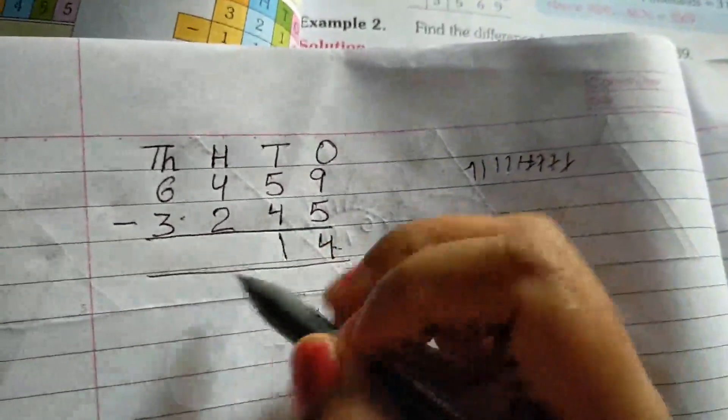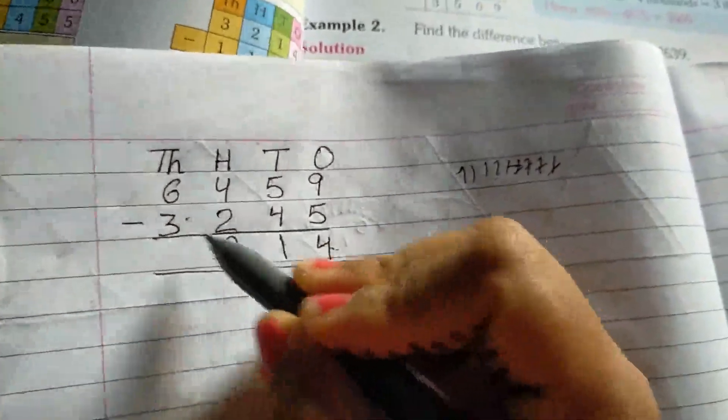You minus it and then only one number will remain. So 4 minus 2 is 2, 6 minus 3 is 3.